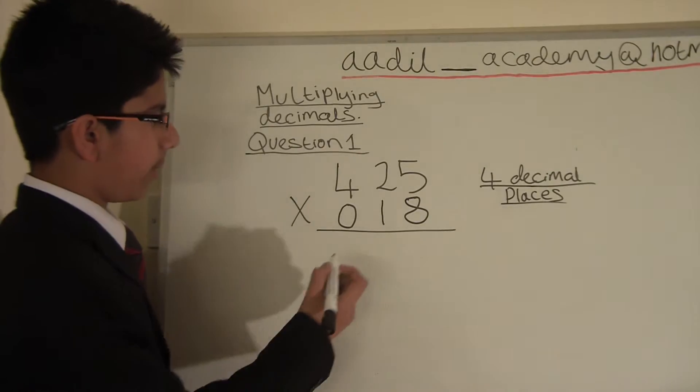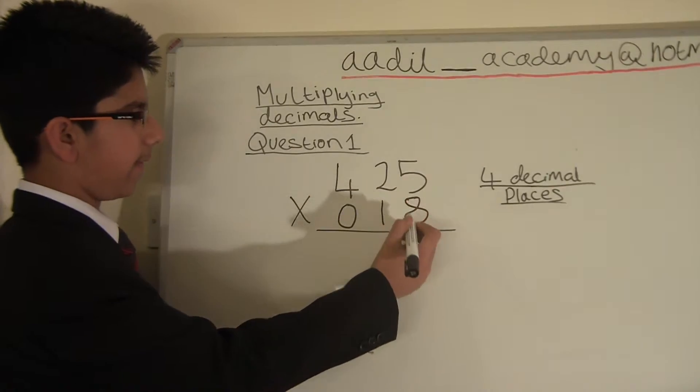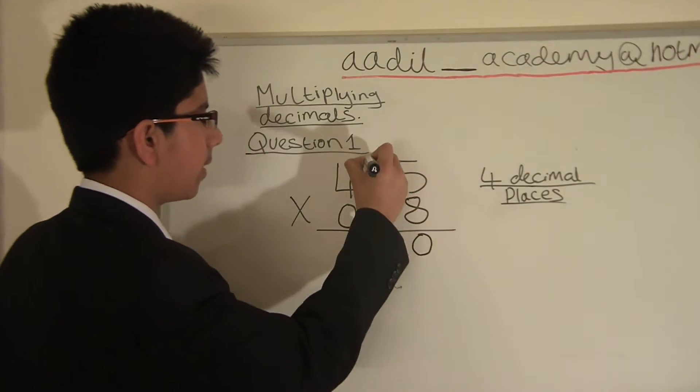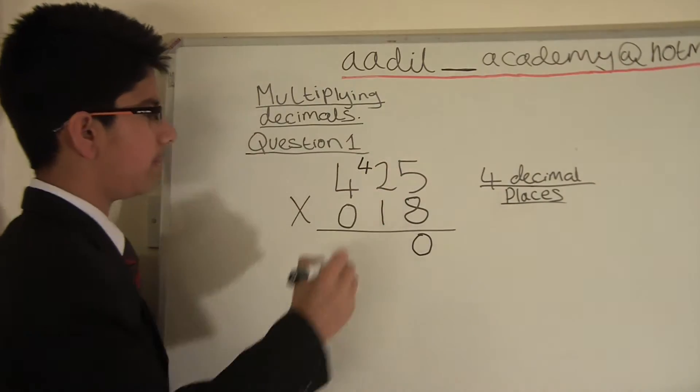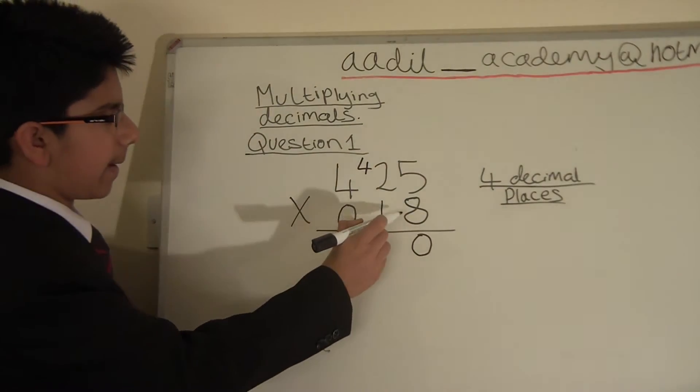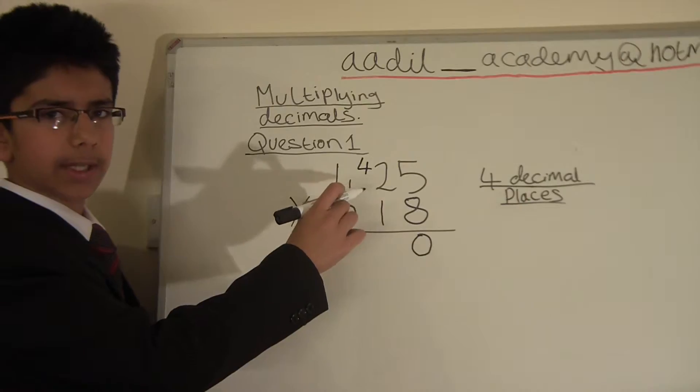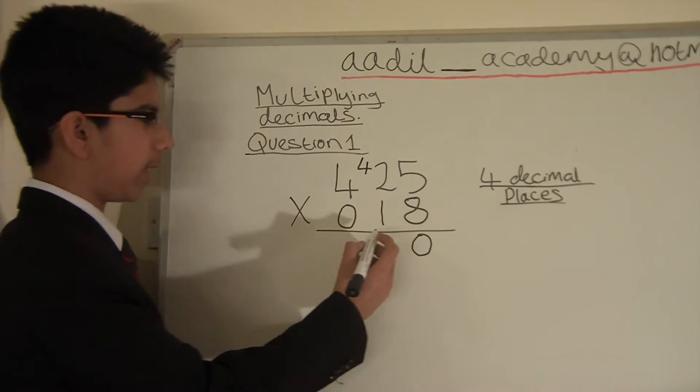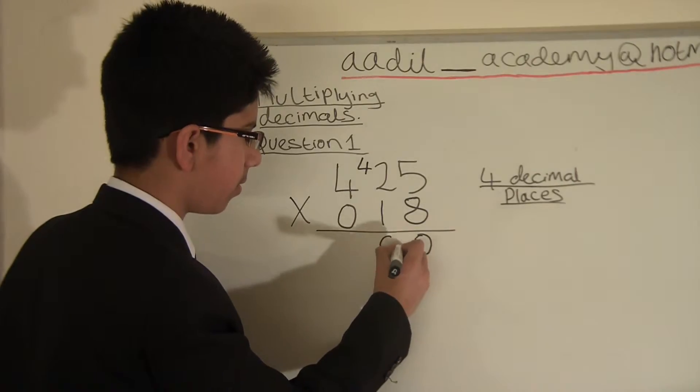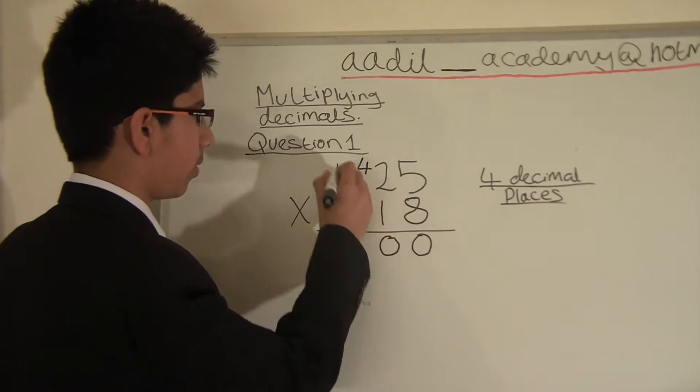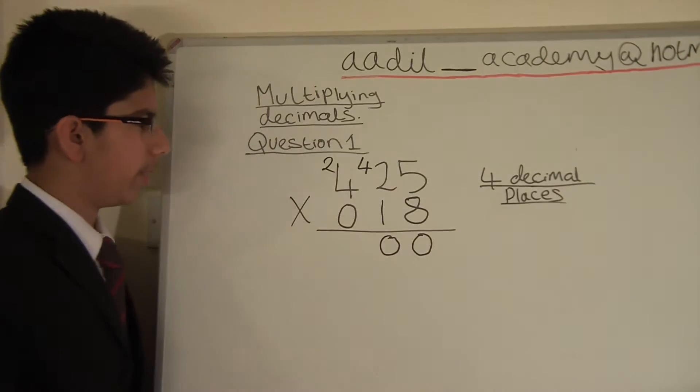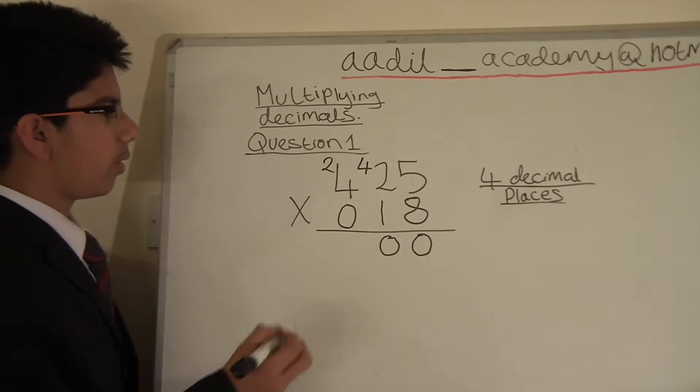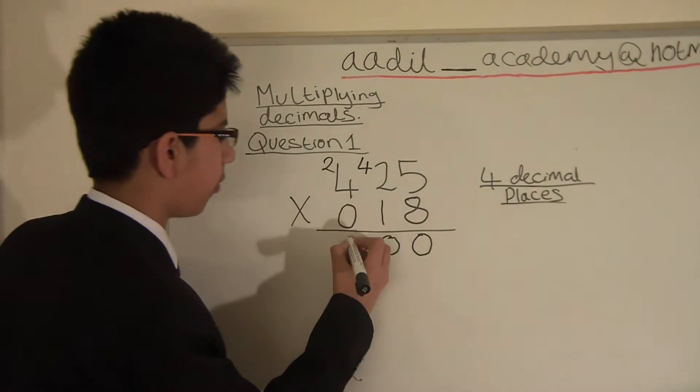We multiply 8 by 5 which equals 40. So we write the 0 here and the 4 here. Then we multiply 8 by 2 which equals 16 and add the 4 which equals 20. So 0, 2 over here, carried. 8 multiplied by 4 equals 32. Add the 2 equals 34.